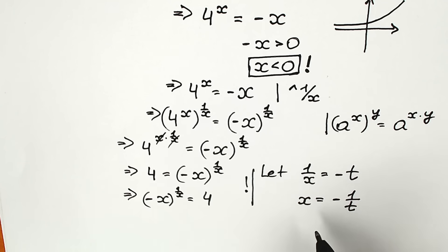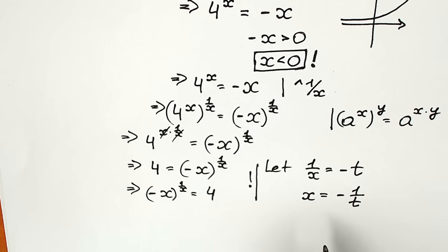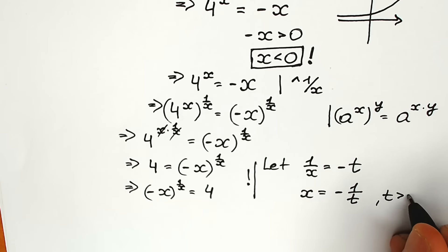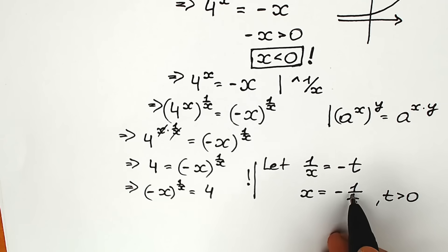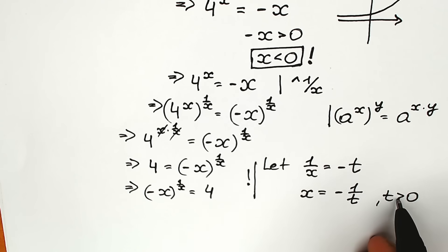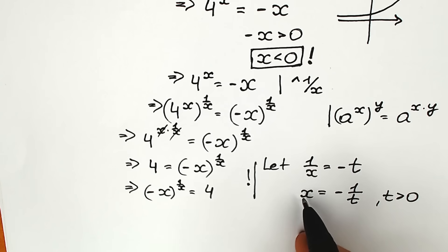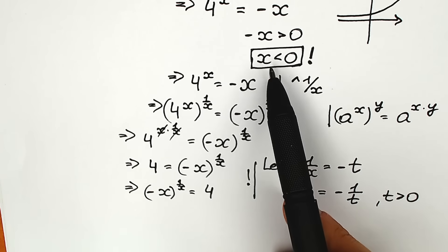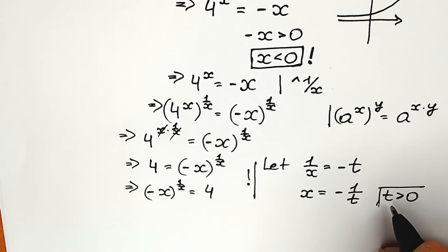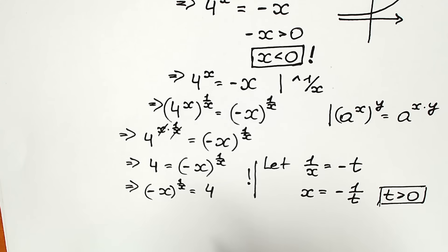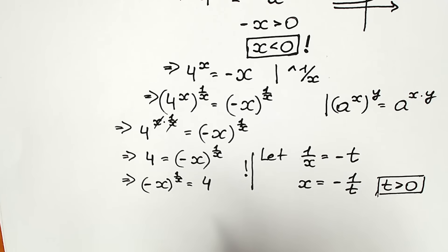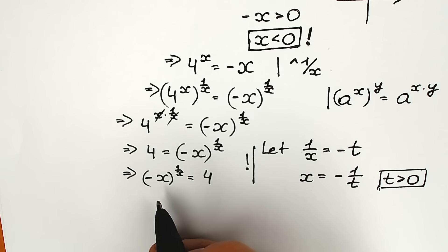Since x needs to be negative, and x equals minus 1 over t, we need t to be positive. When t is positive — for example t equals 3 — then x equals minus one third, which is negative. So t must be greater than 0. Now let's apply these substitutions.